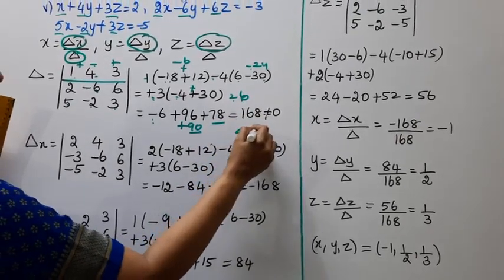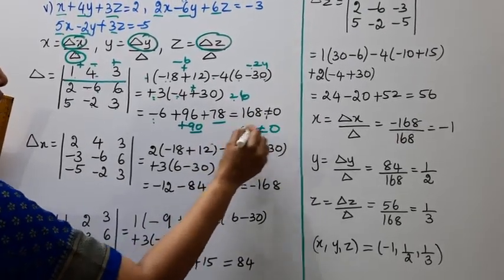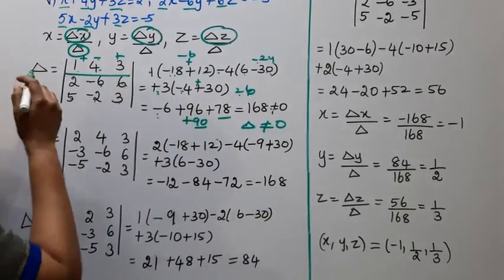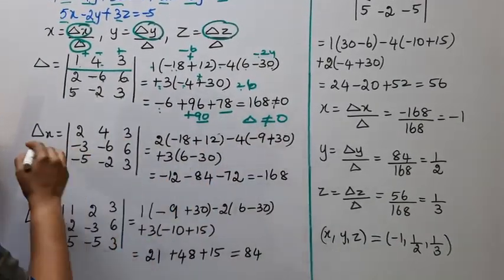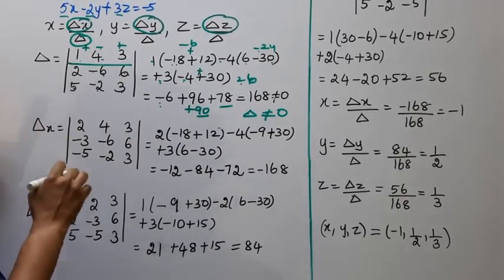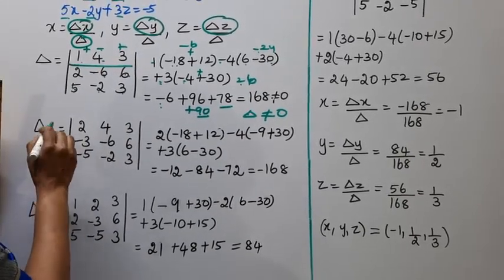Delta is 168, which does not equal zero. Since delta is not equal to zero, we can find delta x, delta y, and delta z. Now let's compute delta x.